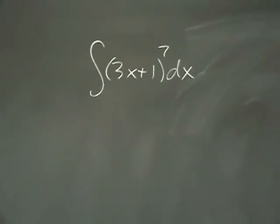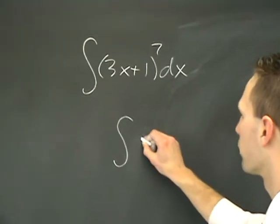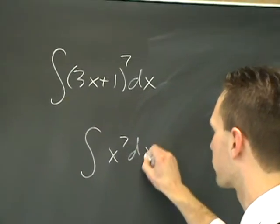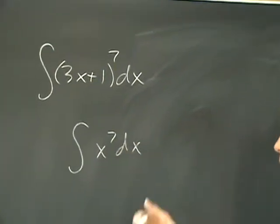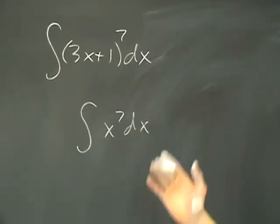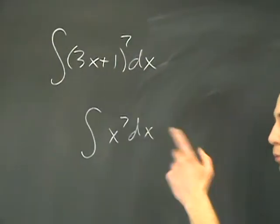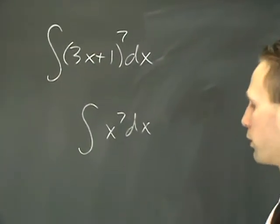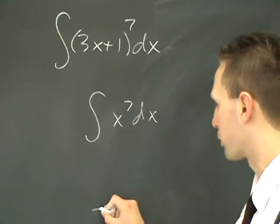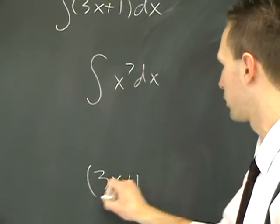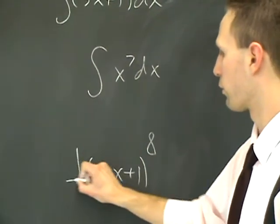You do it with this, and you say, this is awfully similar to the integral of x to the 7 dx, which is going to be 1 eighth x to the 8th. But you notice that it's 3x instead of just x. So what you do is you go for the base answer, it's going to be 3x plus 1 to the 8th over 8.